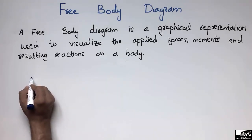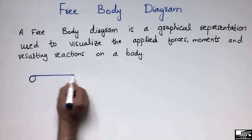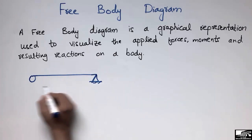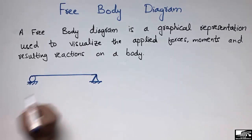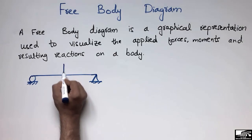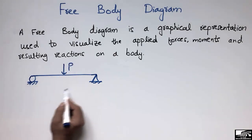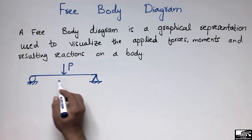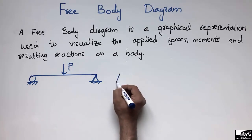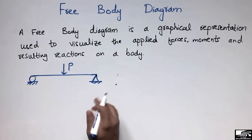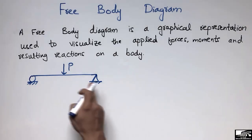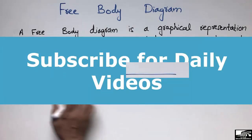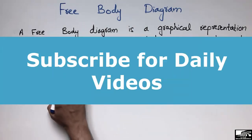Let's consider a simply supported beam with a roller and hinge support, with a point load acting at the center of the beam. For the free body diagram of this beam, I will replace the supports with reaction forces, because these reaction forces provide resistance to the applied load.